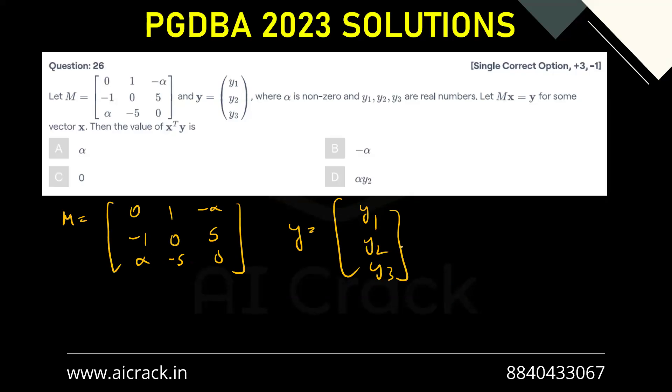Okay, now dimensions of Y are 3 by 1, dimensions of M are 3 by 3, and we are multiplying M with X to get Y, right? So what kind of dimension do we have to multiply with M so that we get a dimension of 3 by 1? We have to multiply a dimension of 3 by 1, right? So X has to have a dimension of 3 by 1 only. Only in that case we'll be getting 3 by 1 as an output.